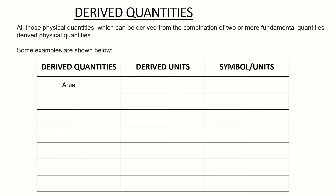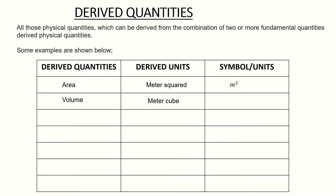Starting with area: the unit for area is meter squared, symbol m². Area is a combination of two base units — meters times meters gives meters squared. Next is volume: it is a derived quantity with unit meter cubed, m³, being a combination of three similar base units. So volume is also a derived quantity.